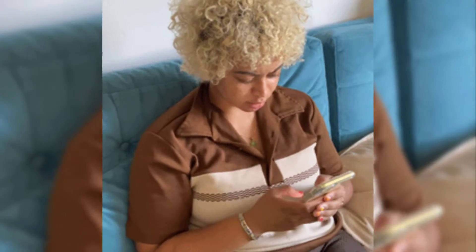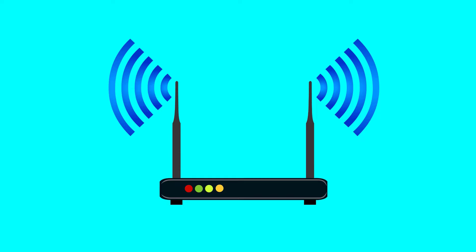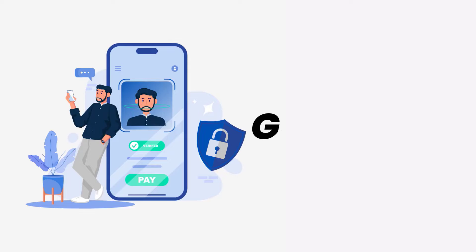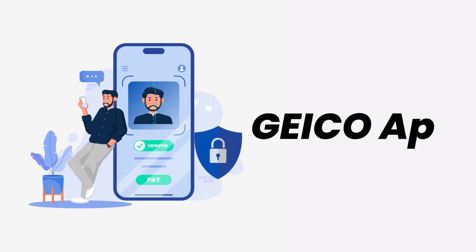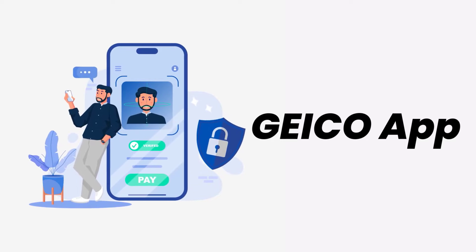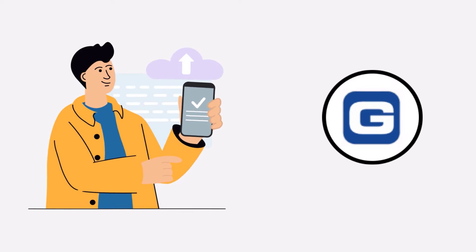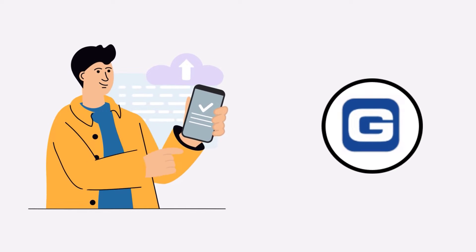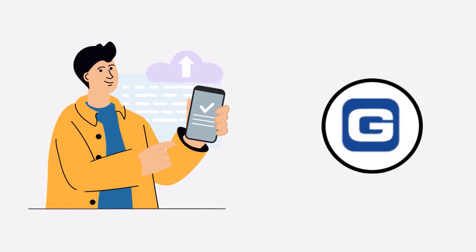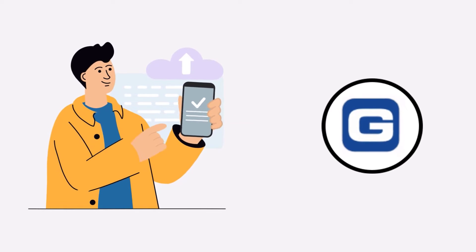It might be possible that you're not able to log into the Geico mobile app due to a connectivity issue. First of all, you need to make sure you have a strong and stable internet connection. To do so, you need to do a quick test to check if your internet's working or not — simply open up an app that runs on internet other than the Geico mobile app and check if it's working.